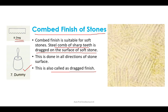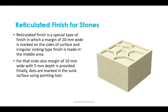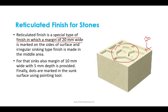The reticulated finish is a special type in which a margin of 20 millimeter width is marked on the sides of the surface and an irregular sinking type finish is made in the middle area. A margin of 10 millimeter wide with 5 millimeter depth is provided, and finally dots are marked in the sunk surface using a pointing tool.